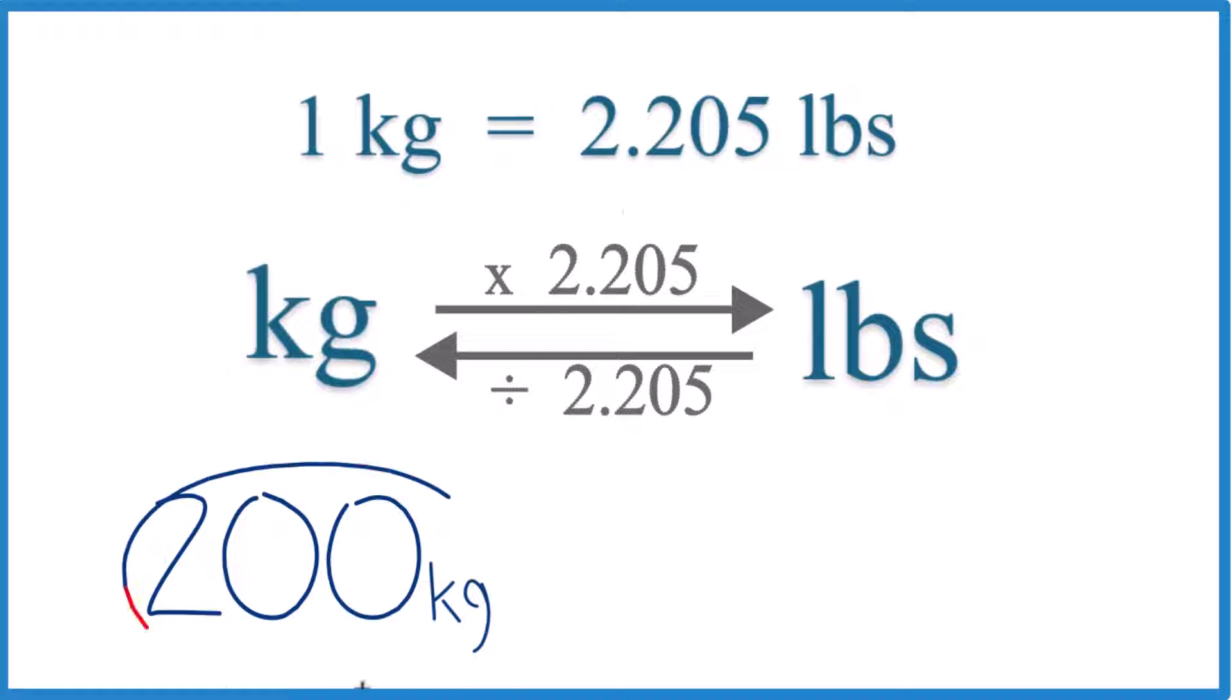All right, let's convert 200 kilograms to pounds. Here's how you do it. One kilogram equals 2.205 pounds. So if you had 200 kilograms, you just have 200 times this number here. This is a conversion factor, and we need it when we go from kilograms to pounds or pounds to kilograms.